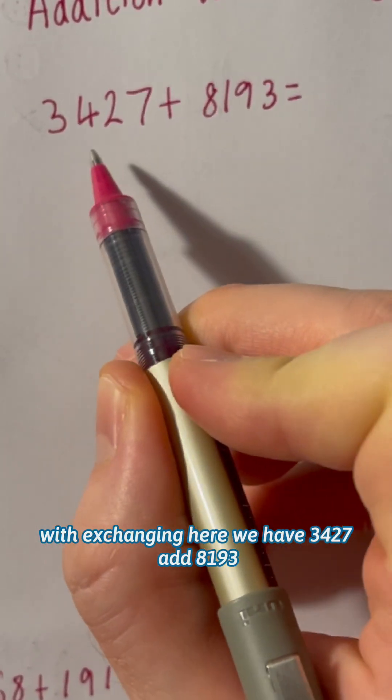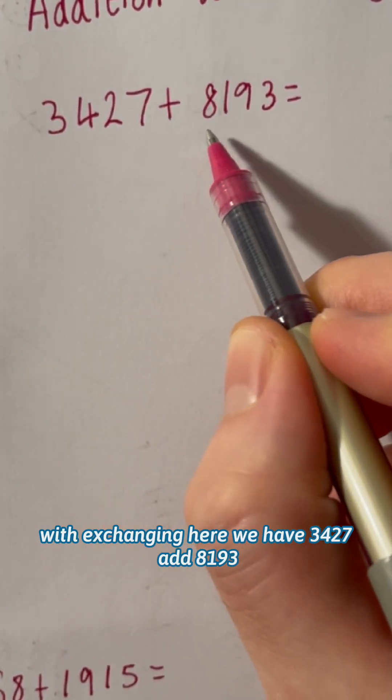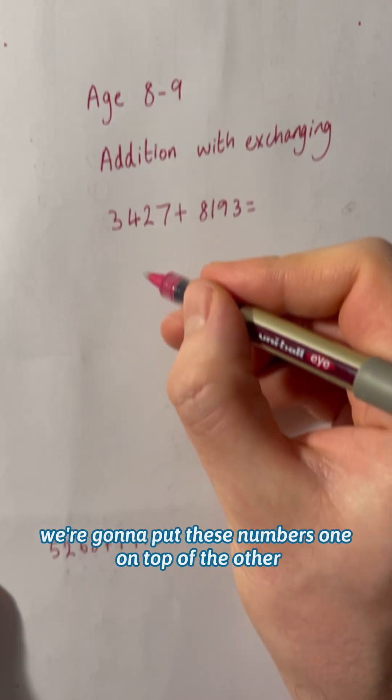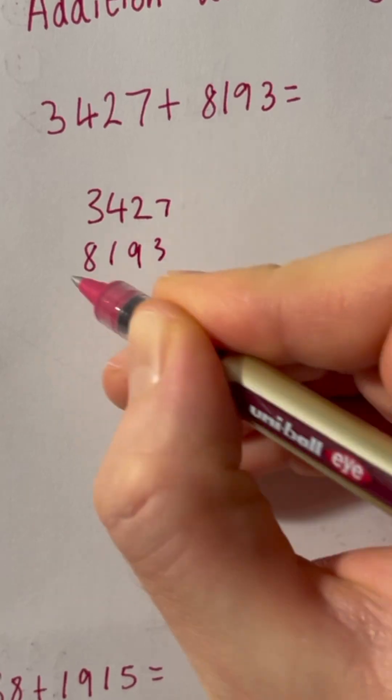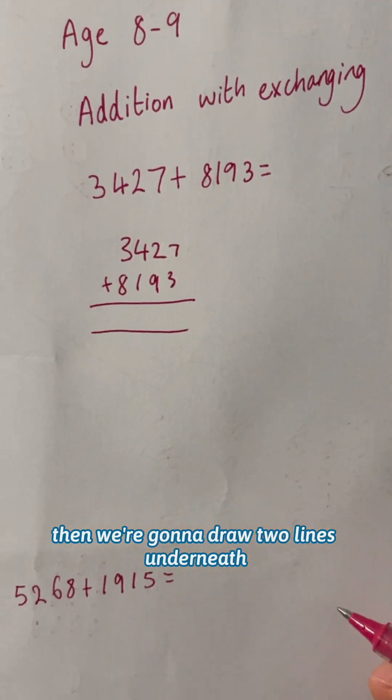Here we have 3427 plus 8193. We're going to put these numbers one on top of the other like this. Then we're going to draw two lines underneath.